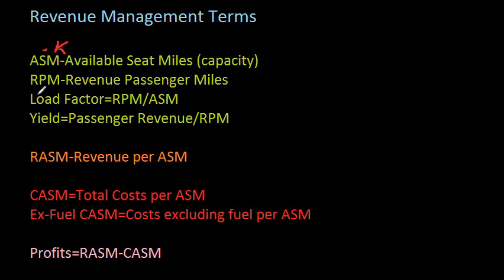The next term is related to that. This is the number of passengers flying in those seat miles: Revenue Passenger Miles, RPM — the number of passengers multiplied by the number of miles they are flying. So if on that 100-mile flight you had 100 seats but only 75 passengers, your revenue passenger miles would be 7,500 — 75 times 100.